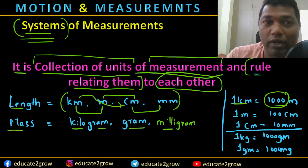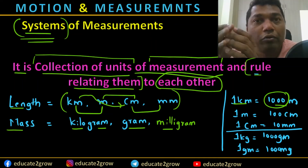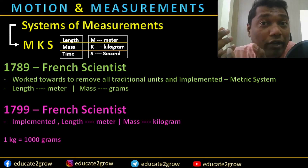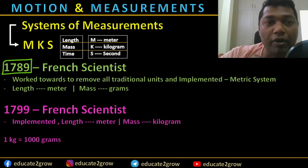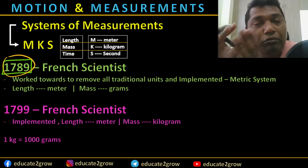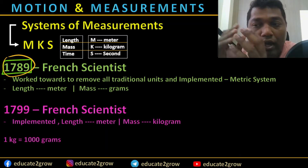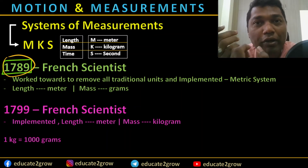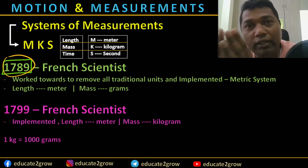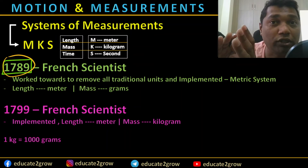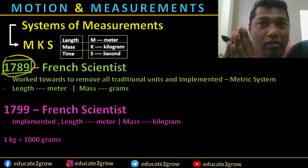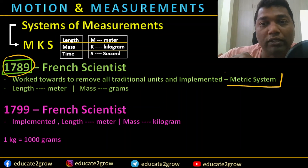In the ancient years, people — Egyptians and people on several different continents — were using different body parts to measure length and mass. Before standardization, there were several traditional units that were difficult to maintain and not common for everyone. So French scientists got the opportunity to remove all traditional units and simplify the measuring system, which is called the metric system. That's where the metric system came into picture.